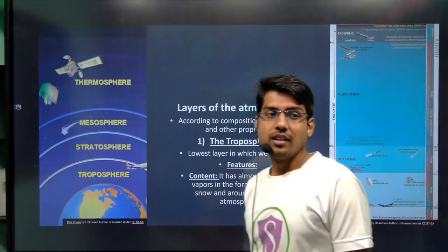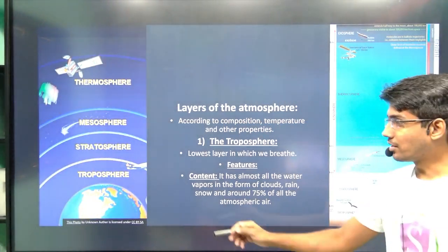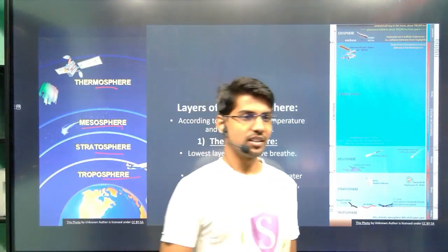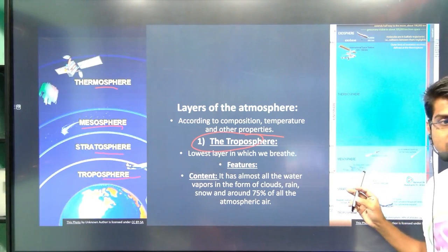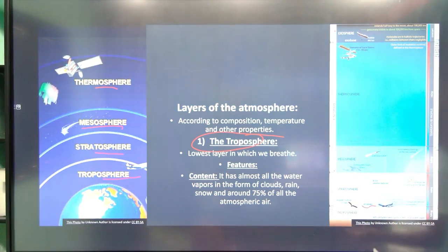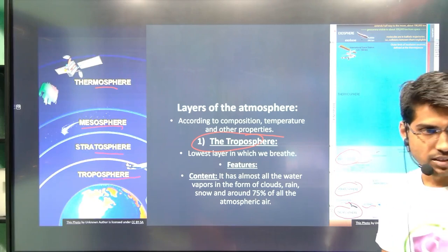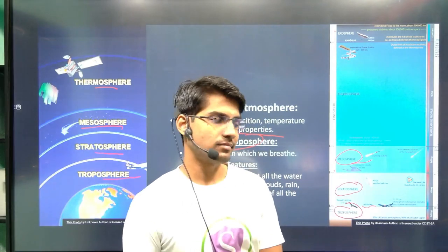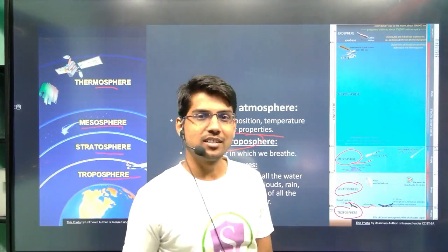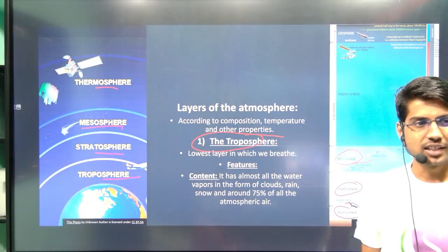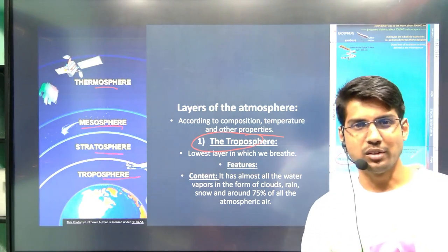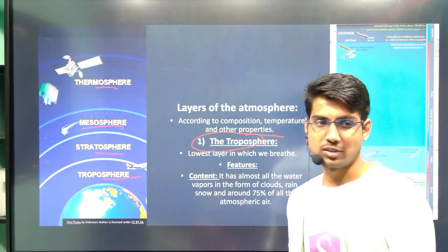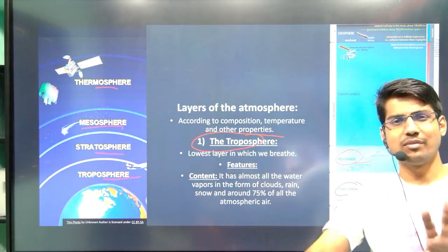So these are the actual layers of our atmosphere. The first one is the troposphere, then stratosphere, mesosphere, thermosphere, and exosphere. You are going to get a PDF of this entire lecture so you will be able to read what is there. Right now you may not be able to read it due to light reflection — these are some of the limitations of our current setup.